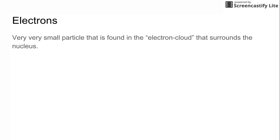And the electrons are really small particles that are found in that electron cloud that surrounds the nucleus. So that's those circles we saw going all around the nucleus that held the protons and the neutrons. And the electrons have a negative charge. Electron, negative charge.